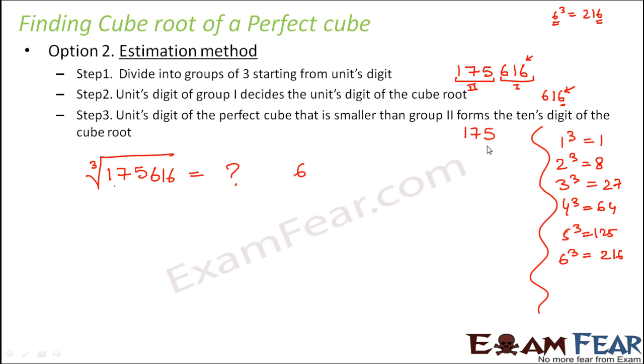So 216 is greater than 175, so it will not do. So what is that value which is less than 175? That is 125. So 125 is the value which is less than 175. Now focus on the units digit of 125. So units digit is 5.